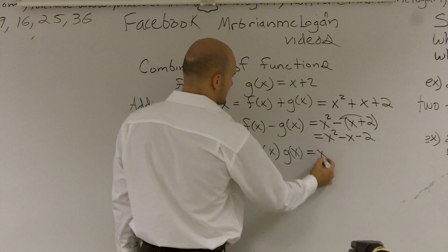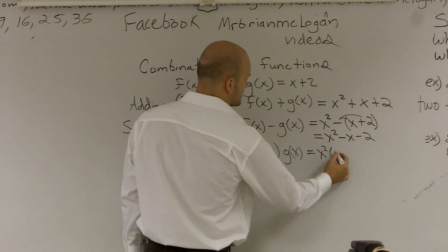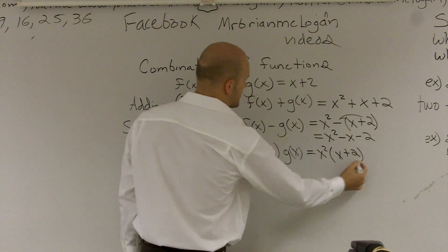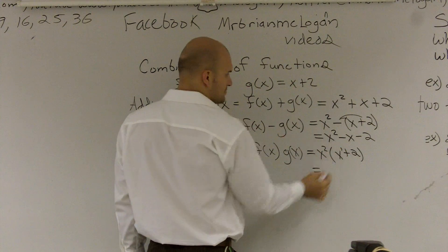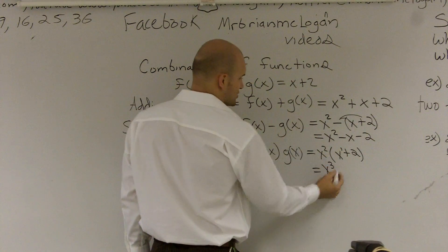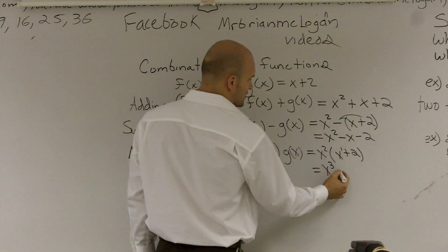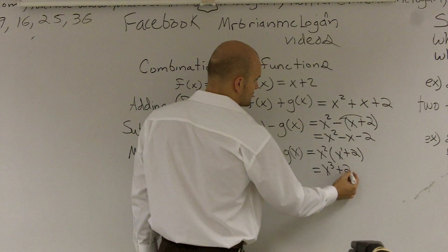So we're just going to multiply x squared times x plus 2. When I multiply them, x squared times x. Remember, you add the exponents. That has an exponent of 1. So it becomes x cubed. x squared times 2 gives you a positive 2x squared.